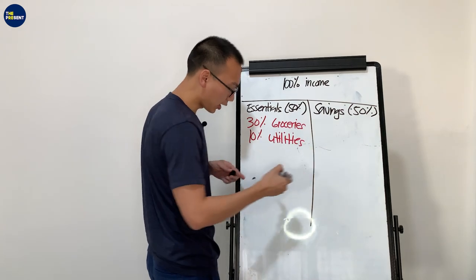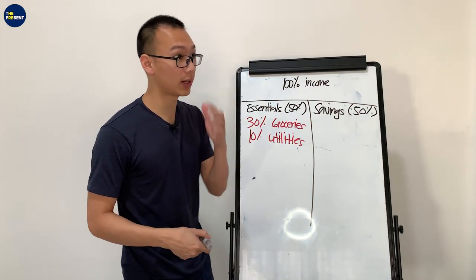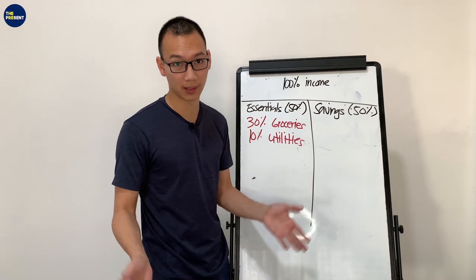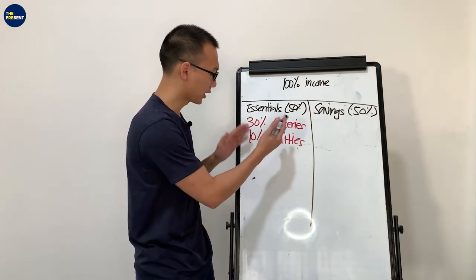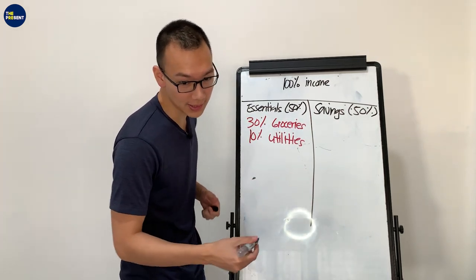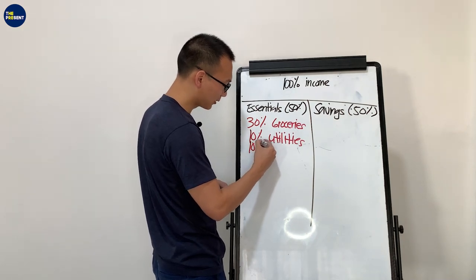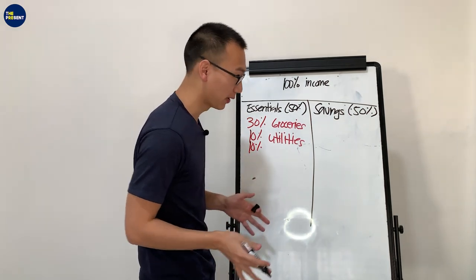And then 10% of that is our utilities. When we talk about utilities, we're referring to our electricity bill and our water bill. And then 10%, this may be funny for you, but since we have pets right now, 10% of that goes to our pets.